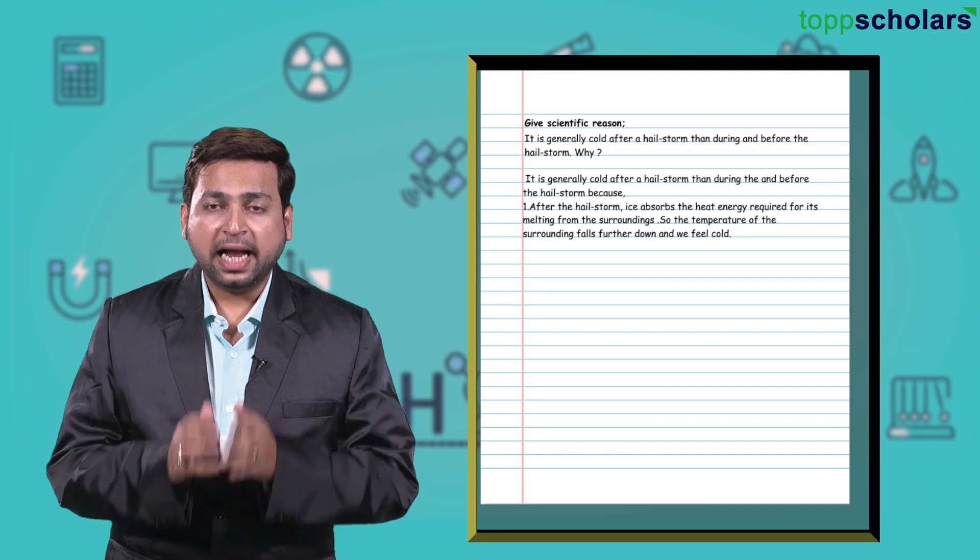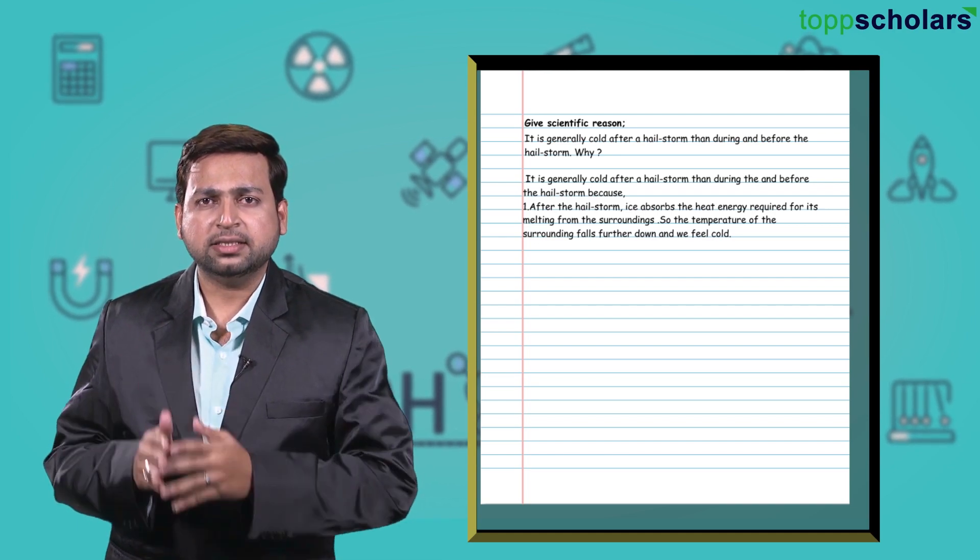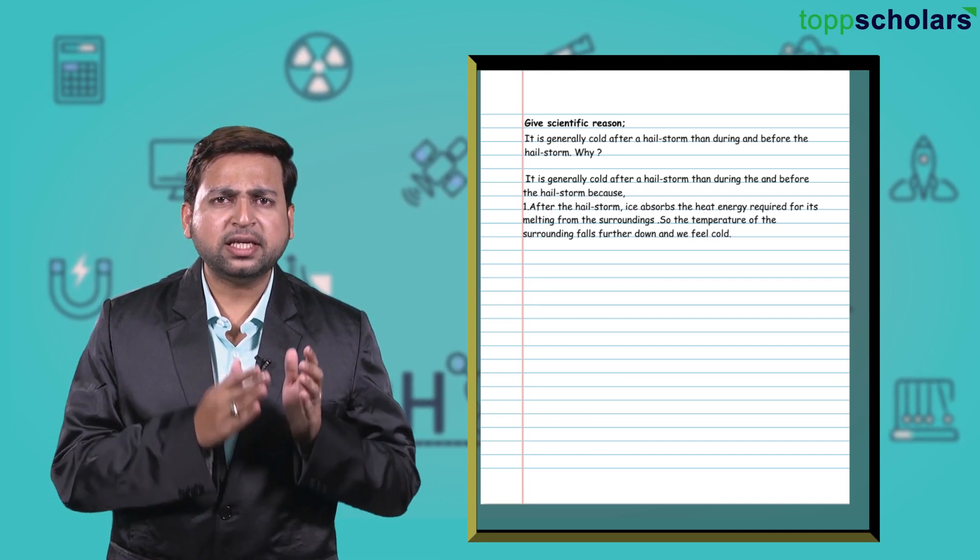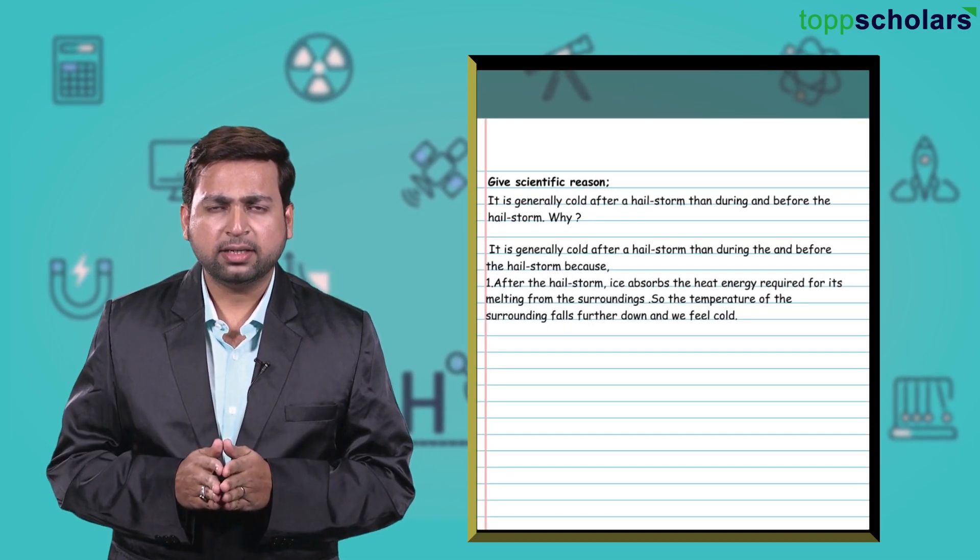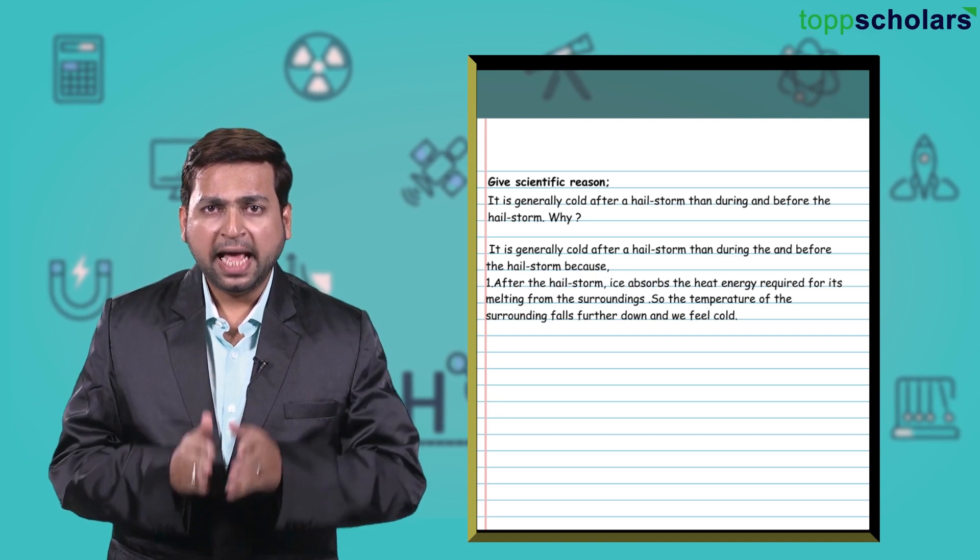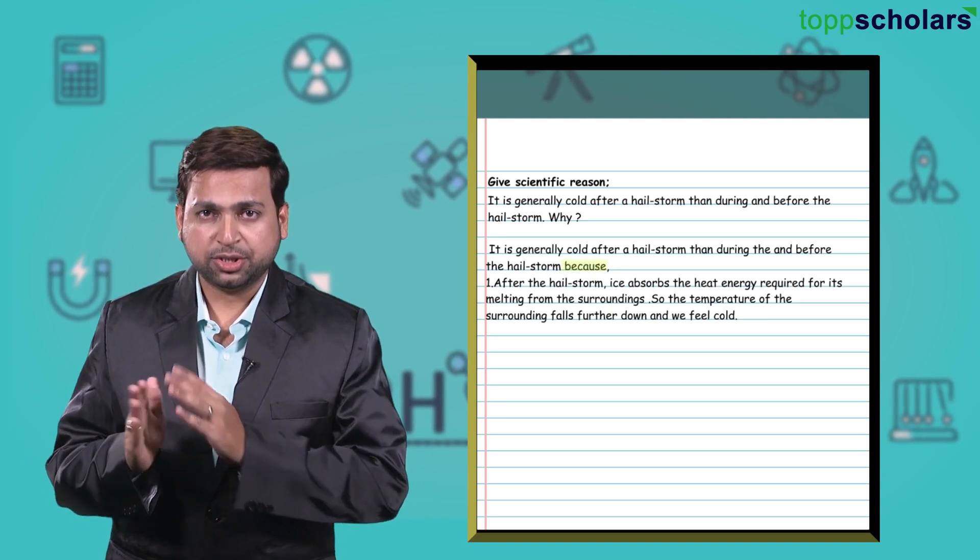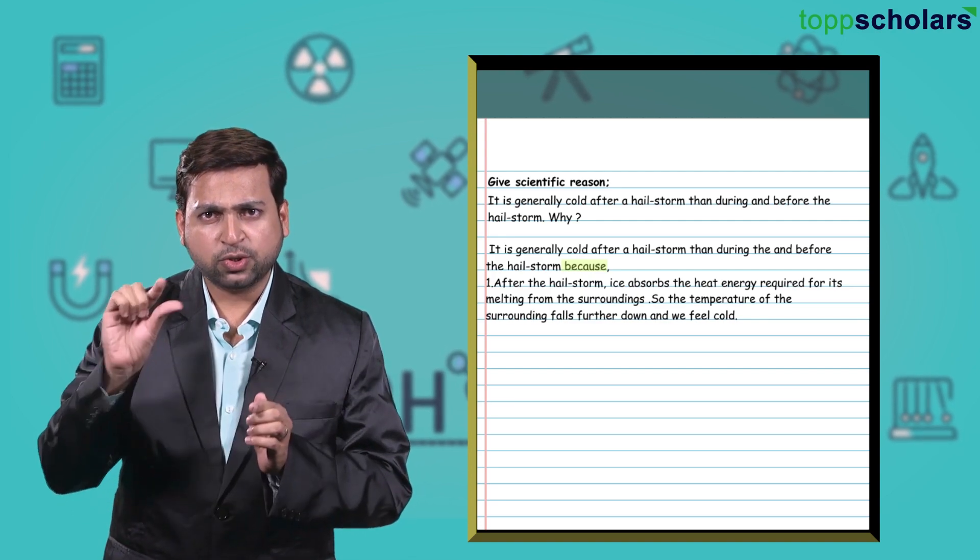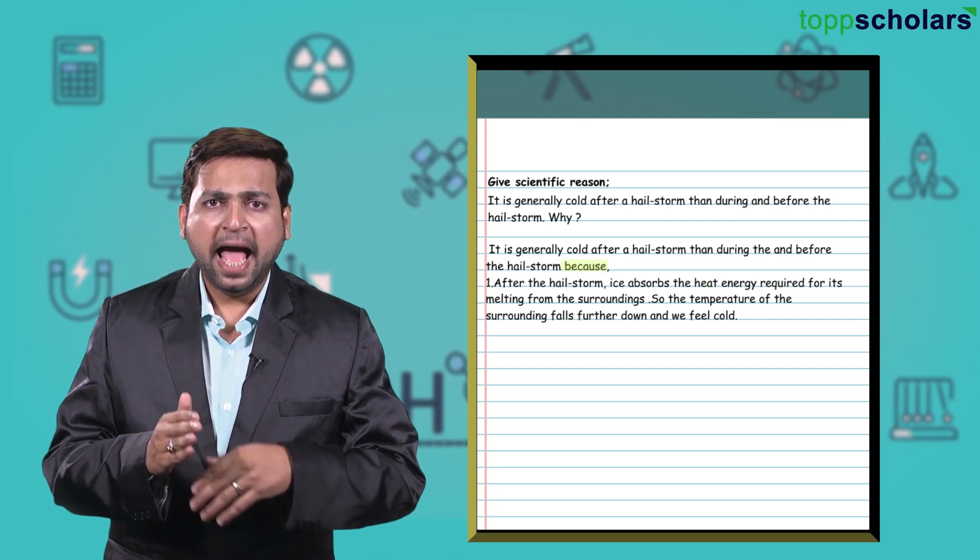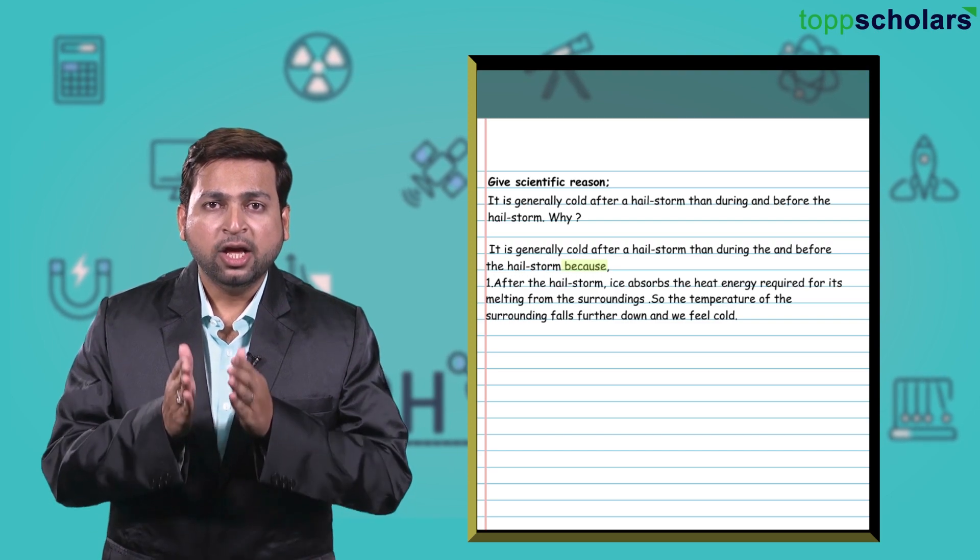Let's talk about one more type: give scientific reason. Now students, when you see this question, this question should be written in this particular format. First you have to write the question, and then write because. This won't be your first point. So the question and then because, and then in the next line you can give the proper scientific reason for that particular question.